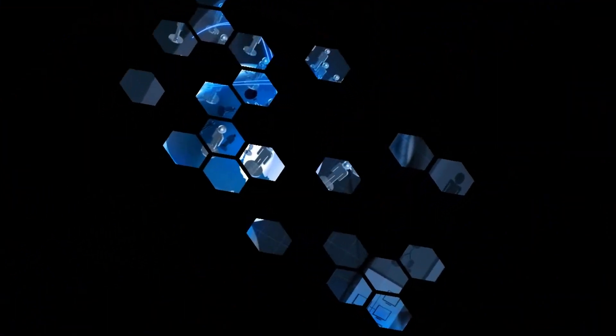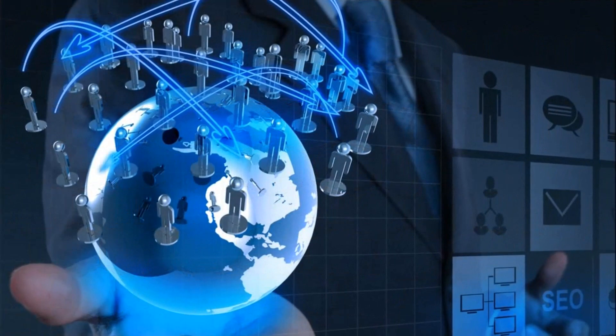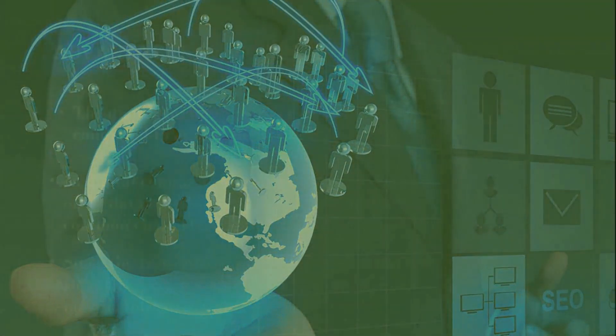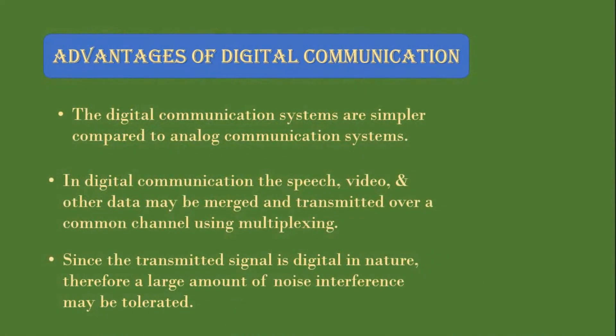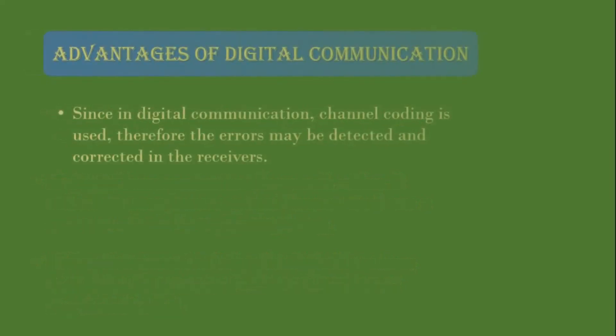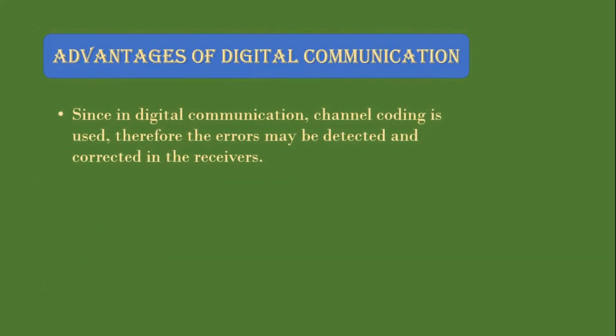Now we will look at the advantages of digital communication over analog communication. First, digital communication systems are quite simple compared to analog communication systems. In digital communication, speech, video, and other data may be merged and transmitted over a common channel using multiplexing. Since the transmitted signal is digital in nature, a large amount of noise interference may be tolerated. Finally, since channel coding is used in digital communication, errors may be detected and corrected at the receiver.